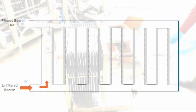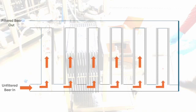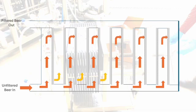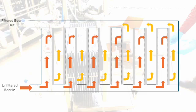At this point, the filtration process can start. Beer flows into the filter sheet through the inflow plate, which always faces the rough side of the filter sheet. Beer flows out of the filter sheet through the outflow plate, which always faces the smooth side of the filter sheet. Beer should always flow into the rough side of the filter sheet and out through the smooth side.